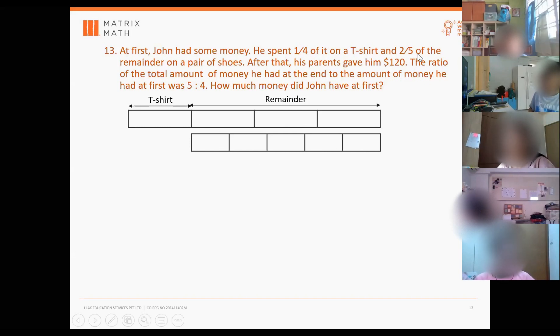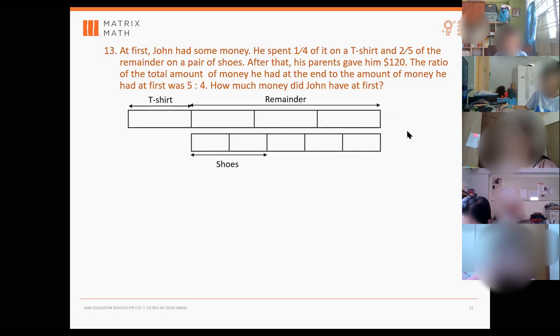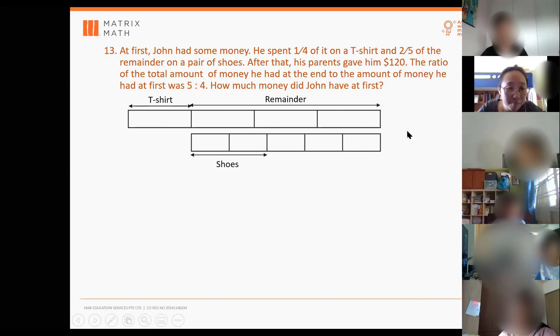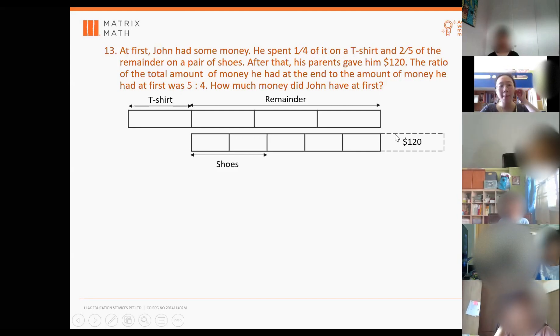Just make sure the whole remainder size is the same. So out of this 5 units, 2 fifths of the remainder on a pair of shoes. So out of 5 units, 2 units will be on the shoes. So I have up to here first. Then they say after that his parents gave him $120. So am I able to include the $120 in this model?